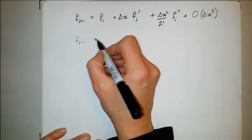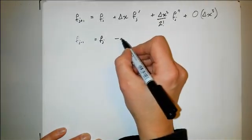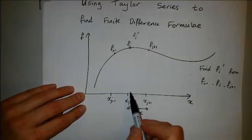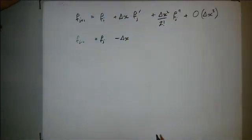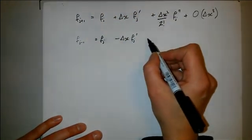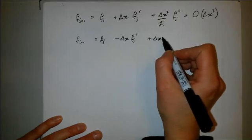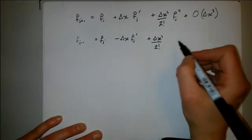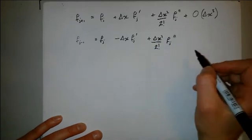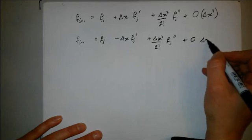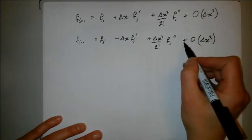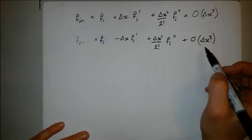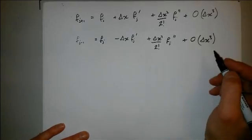And now f_{j-1}, so this is now minus delta x because f_{j-1} is a distance minus delta x from x_j, f'_j, plus delta x squared over 2 factorial, so that delta x squared is now minus delta x squared, f''_j double dashed, plus order delta x cubed. I don't say minus there because this order means proportional to, so that constant of proportionality could be negative or positive.